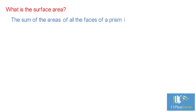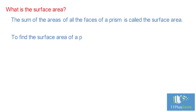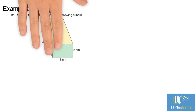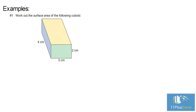To find the surface area of a prism, you need to find the area of each face and add them together. Examples: Number one — work out the surface area of the following cuboid.